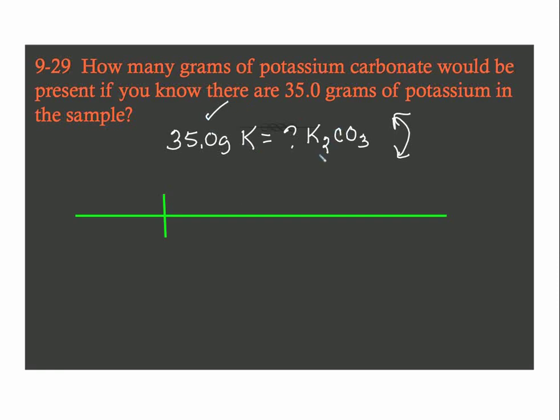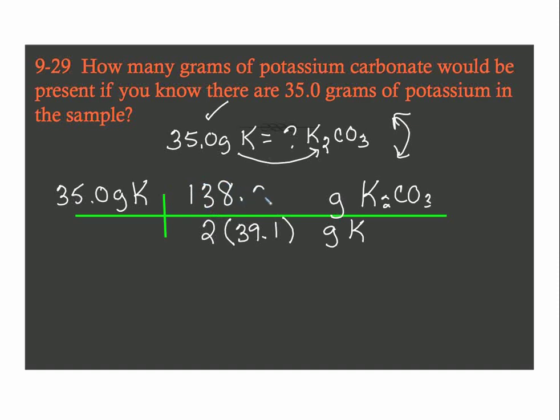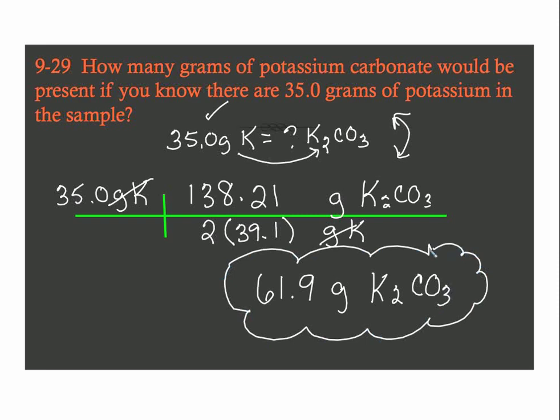This time we're starting with the within and going to the mass of the whole. We start with 35.0 grams of potassium. This time I want to get rid of grams of potassium and go to grams of potassium carbonate K2CO3. This is the inverse of the fraction from my percent composition. I have two potassiums, each contributing 39.1 grams, and my molar mass of potassium carbonate is 138.21 grams. Grams of potassium cancel. We're doing 61.9 grams. Final answer.